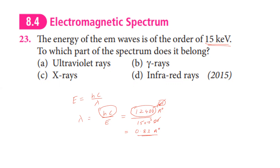With energy of 15×10³ eV, using 12.4 divided by 15,000 gives approximately 0.83 Angstroms. A wavelength of this order corresponds to X-rays. So the wave is in the X-ray region of the electromagnetic spectrum.